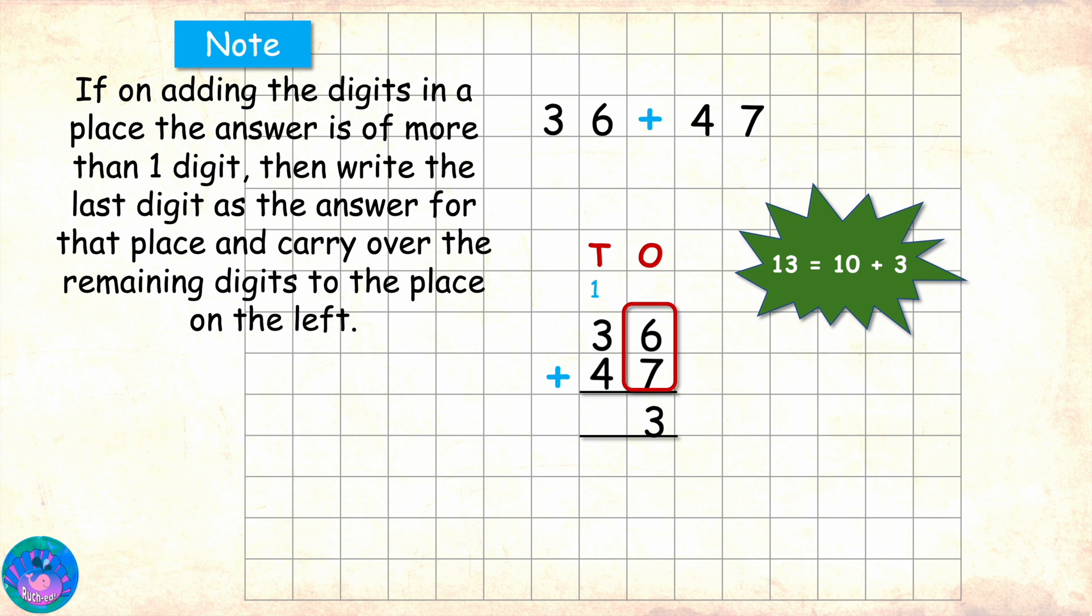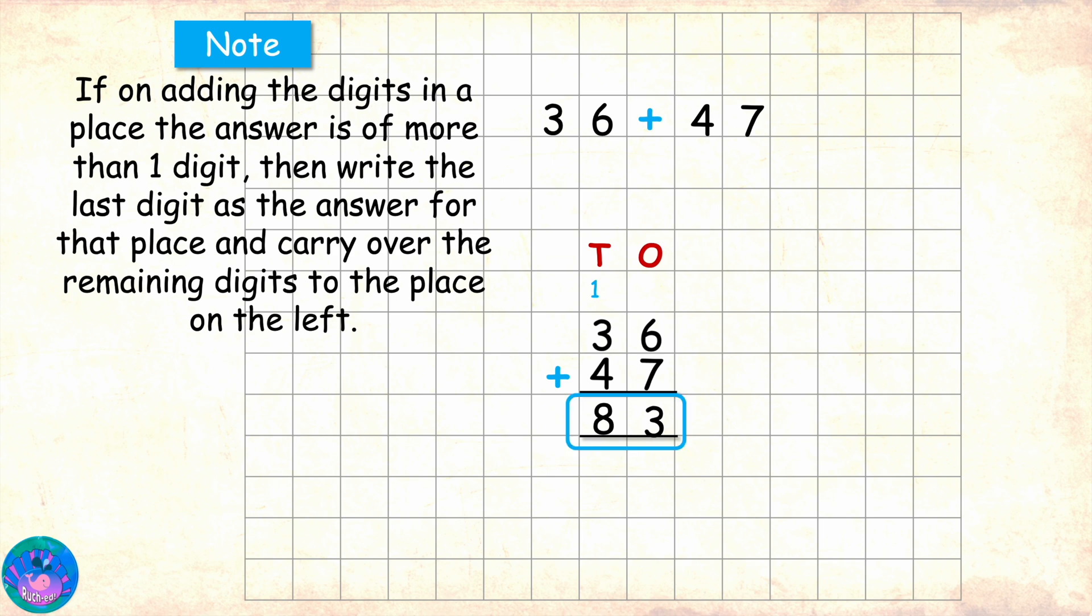Now it makes sense. I am glad. Now let's see what is there in tens place. We have 1, 3 and 4. Can you add these for me? 1 plus 3 is 4 and 4 plus 4 is 8. So, the answer is 8. Correct. The answer for tens place is 8. This means that 36 plus 47 equals 83.